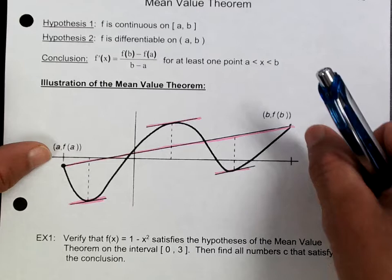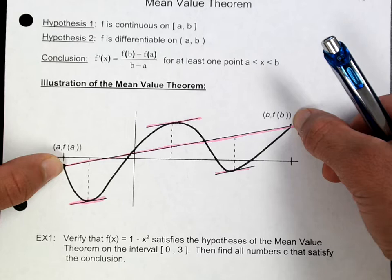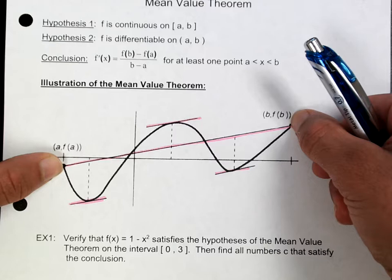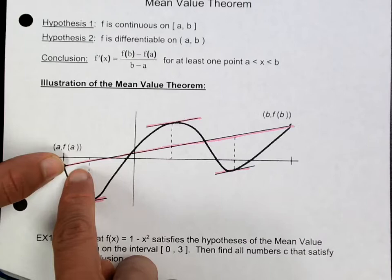Now if you look at this graph, this line between A and B — that straight line — represents the average rate of change between those two points. The theorem says that if this curve is continuous and differentiable everywhere, then there's going to be at least one point between A and B